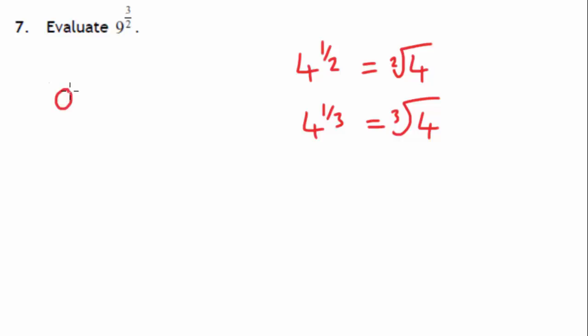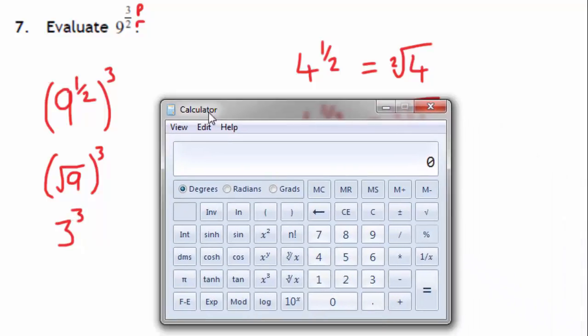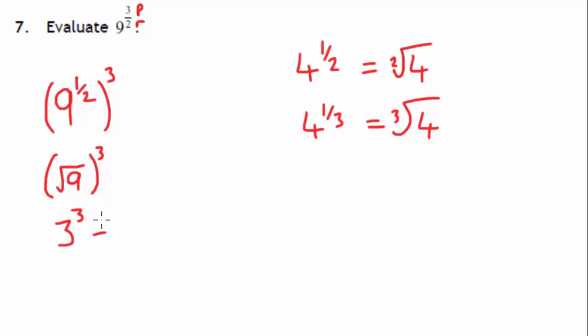So what we can do is we can rewrite this, we can look at it as being a half and then we can look at it as cubing it. Think of this as being the root and think of that as being the power. So if you have a look at 9 to the power of a half, that's the square root of 9 and then we cube it. So the square root of 9 is 3, 3 times 3 is 9 and we then cube that. We might as well use this calculator while it's here. So if I go 3 cubed, that's 27. So your answer here should be 27.